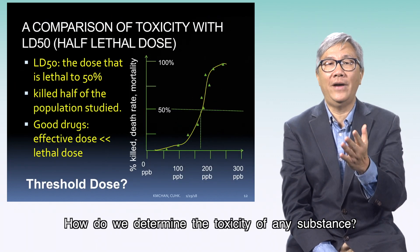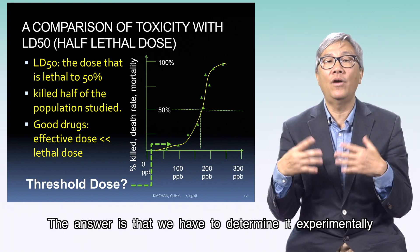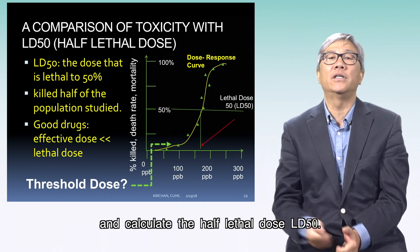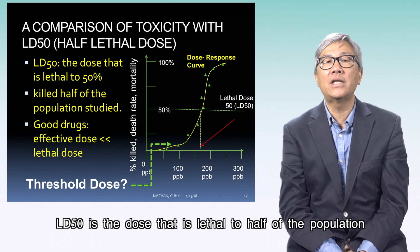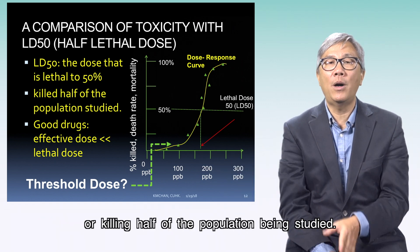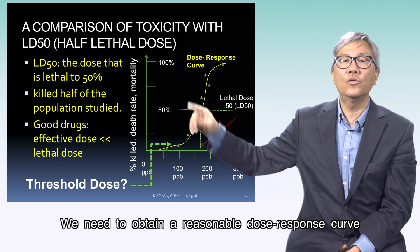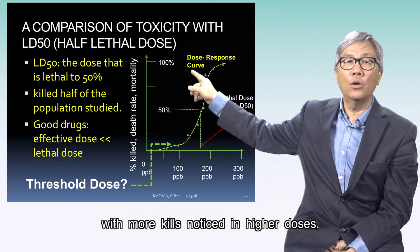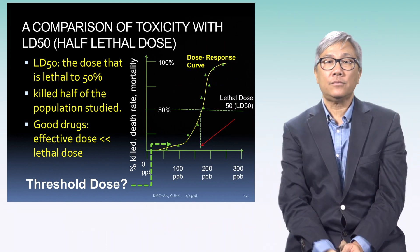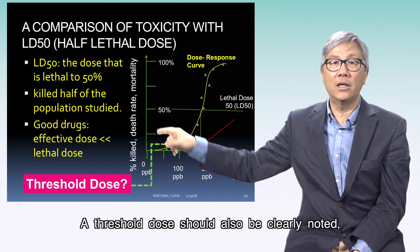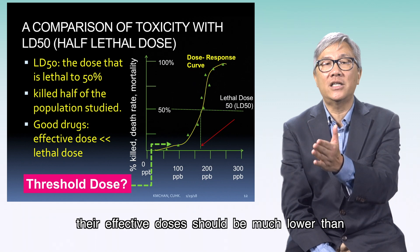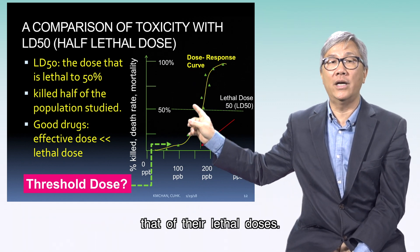How do we determine the toxicity of any substance? We have to determine it experimentally and calculate the half-lethal dose LD50 — the dose that is lethal to half of the population being studied. We need to obtain a reasonable dose-response curve with more kills noticed at higher doses. A threshold dose should also be clearly noted without any significant harm compared with the controls. For any good drugs, their effective doses should be much lower than their lethal doses.